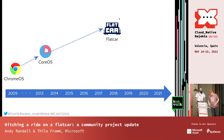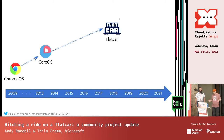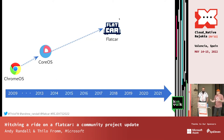Flatcar is, in a nutshell, derived from an operating system called CoreOS Container Linux, which goes back to 2013. It itself was inspired by Chrome OS, which came out of Google, and had applied a lot of these same concepts to a desktop operating system for Chromebooks — simple, secure, automatic updating — and basically translated a lot of those concepts into servers.